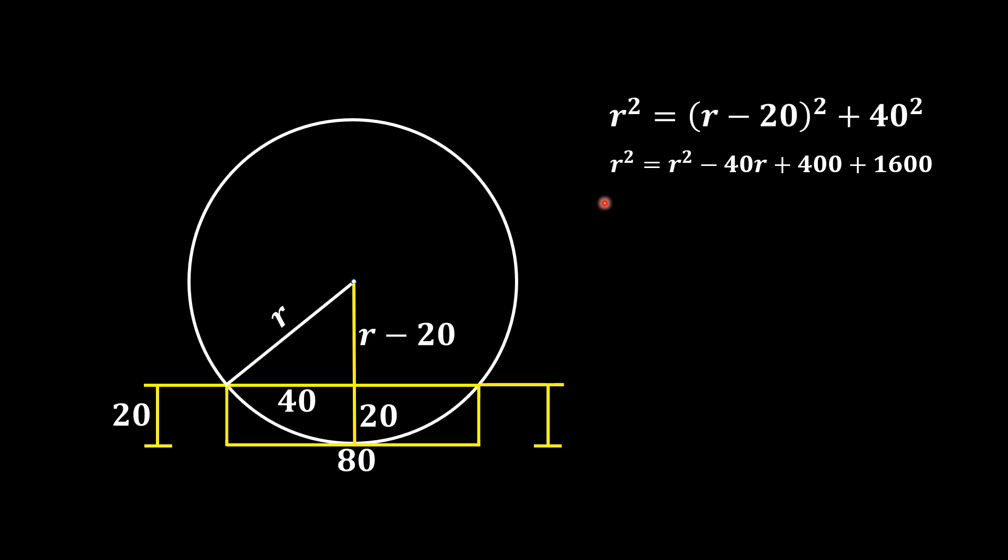The r² terms will cancel out with each other. And 400 plus 1600 equals 2000. So, -40r + 2000 = 0.